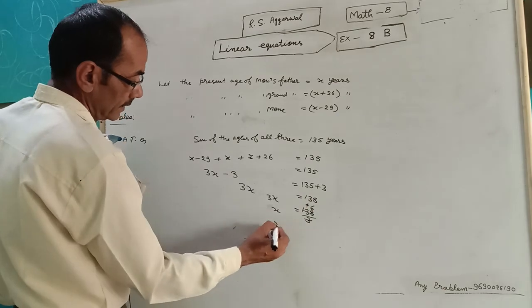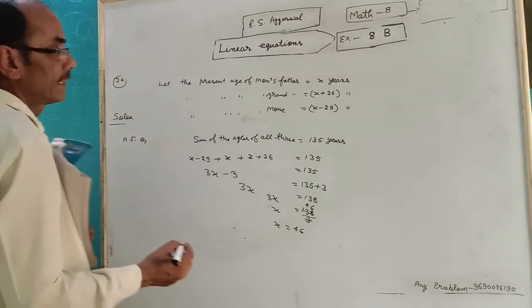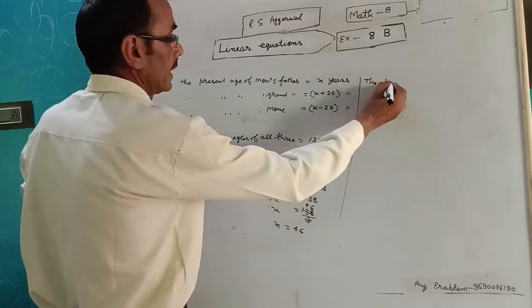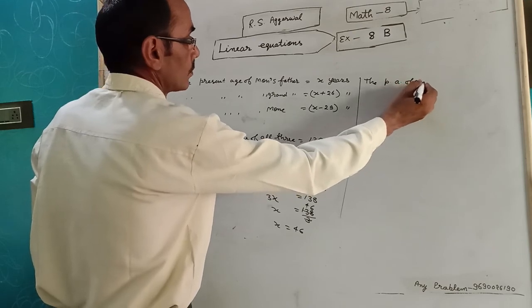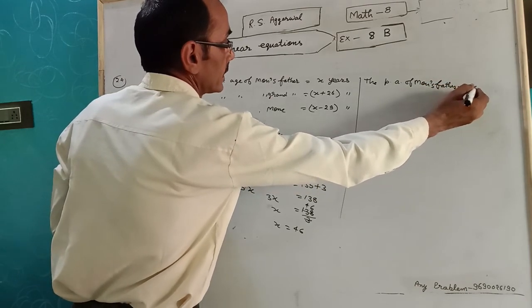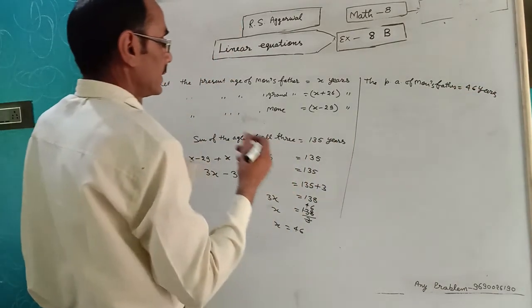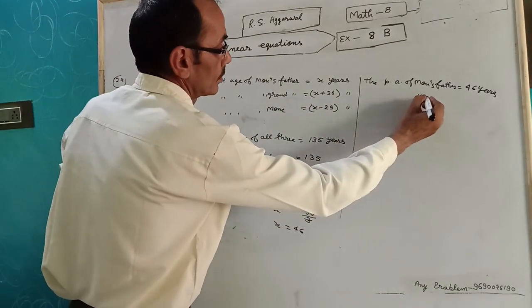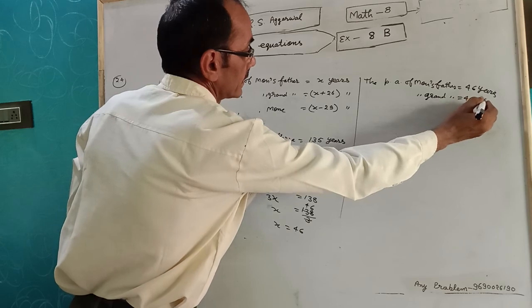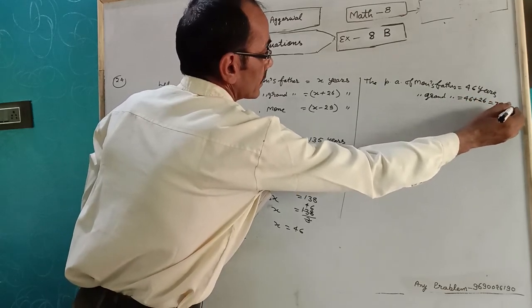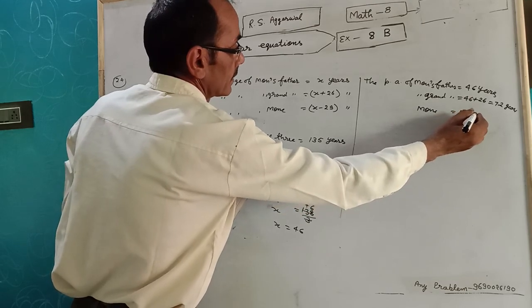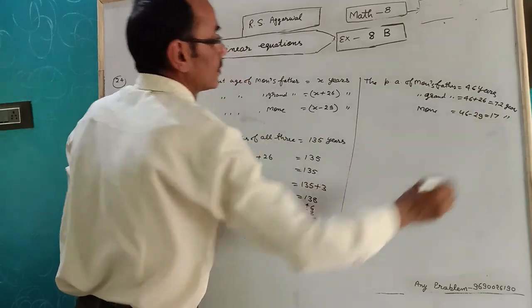What is the x? x is age of Mono's father. The present age of Mono's father is 46 years. Then Mono's grandfather will be 46 plus 26 is equal to 72 years. Mono's age, 46 minus 29 is equal to 17 years.